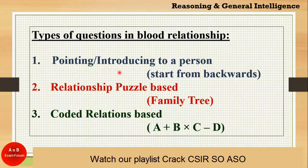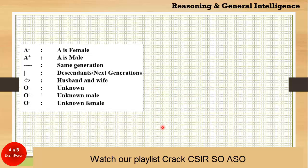The trick for the first type of question — like pointing or introducing to a person — is that we should generally start from the backward and draw our family tree. Relationship puzzles can be easily solved by drawing a family tree, and there are some codes for each relationship operation based on which you can draw your family tree. The crux of blood relationship is making the family tree.